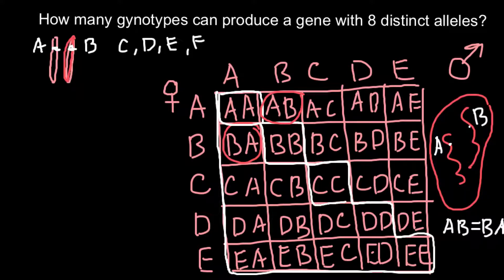We also include the unique homozygous genotypes that appear only once in the table: AA, BB, CC, DD, and EE. Counting all unique genotypes, we get 1, 2, 3, 4, 5, 6, 7, 8, 9, 10, 11, 12, 13, 14, and 15. So when we have five alleles in the gene pool, that gives us 15 unique genetic combinations.